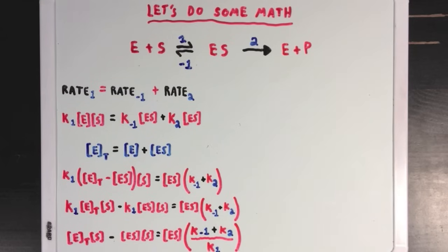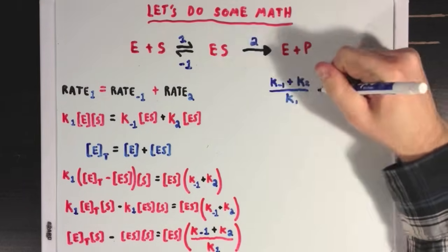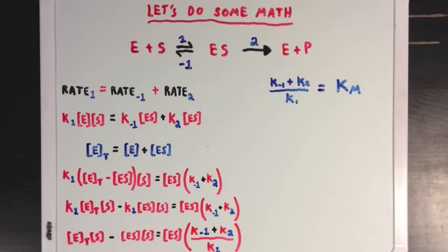Now, since all these rate constants are constant values, I'm going to combine them in this expression of K minus 1 plus K2 over K1 into a new term Km, which I'm going to talk a little bit more about later.